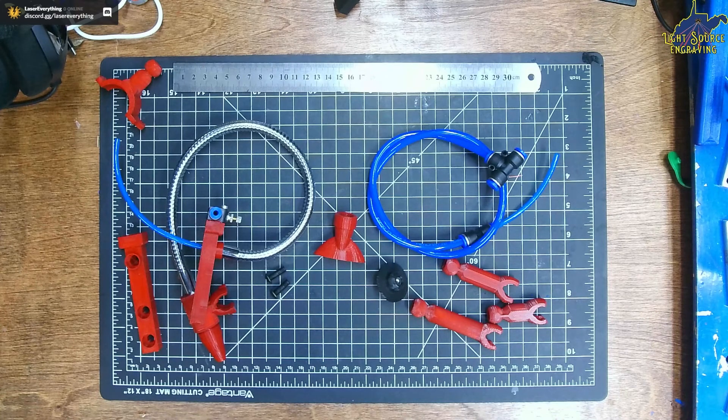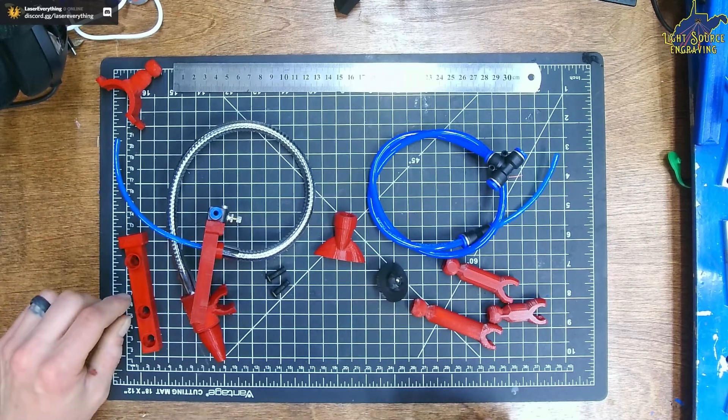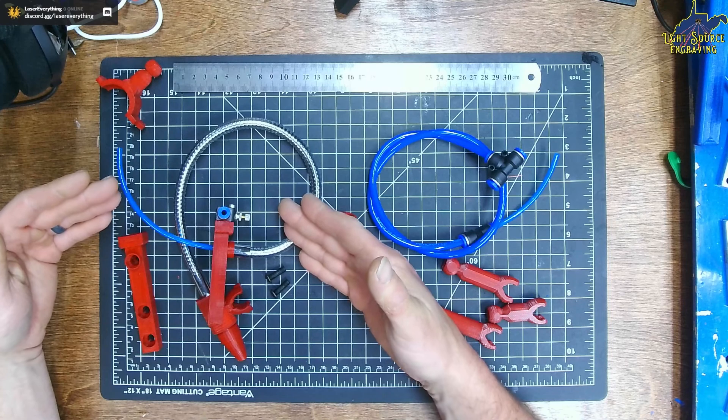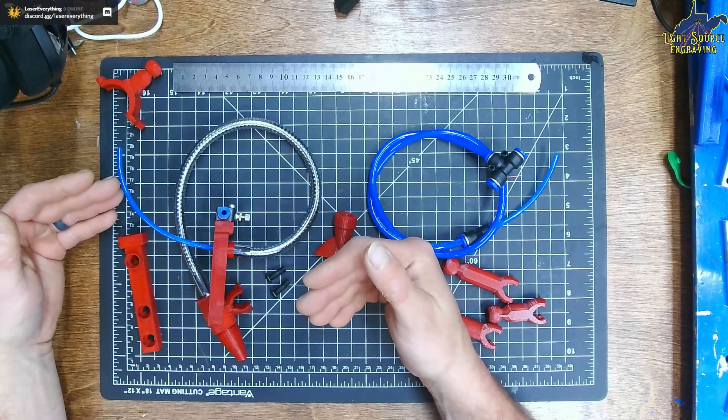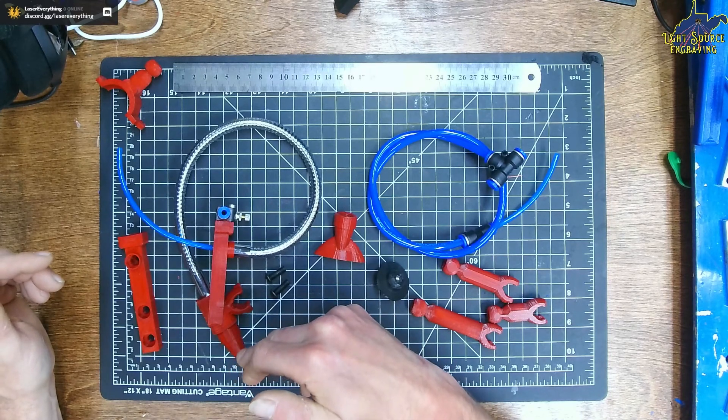When you first open your package containing the light source engraving air assist kit, you will find the main assembly will be preassembled with the valve, the gooseneck, the base, the coupler, and the nozzle.